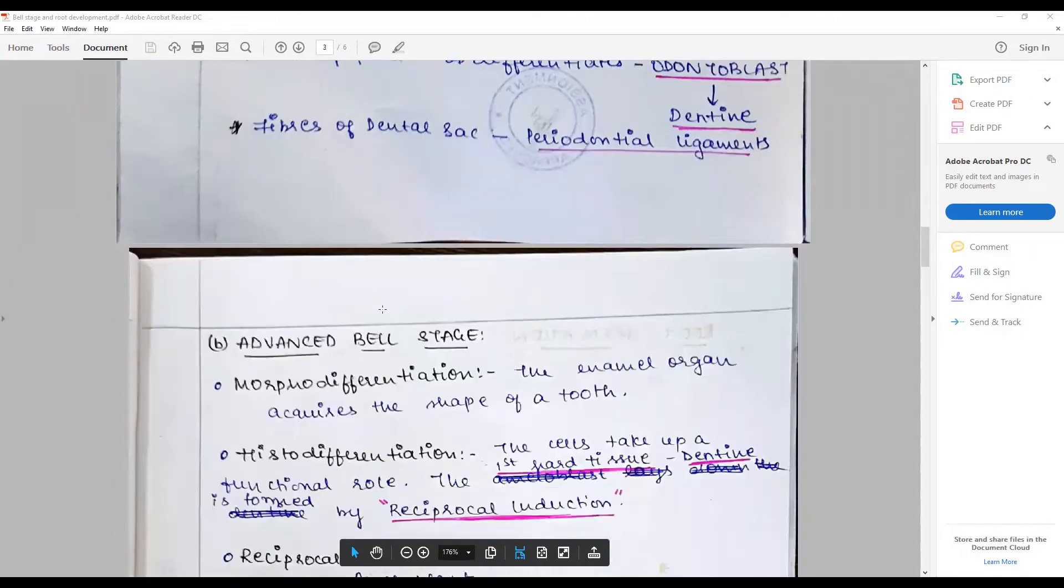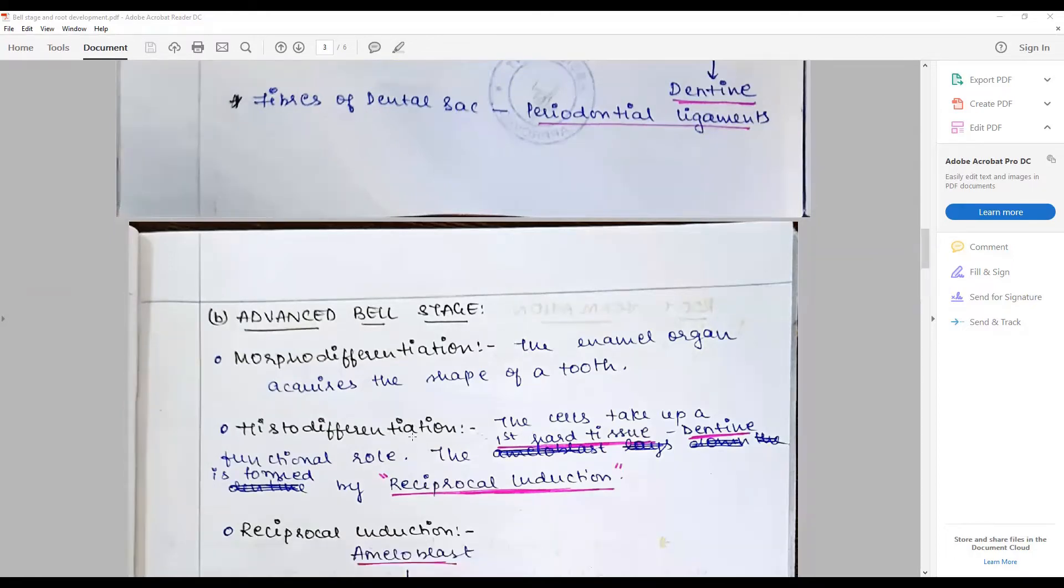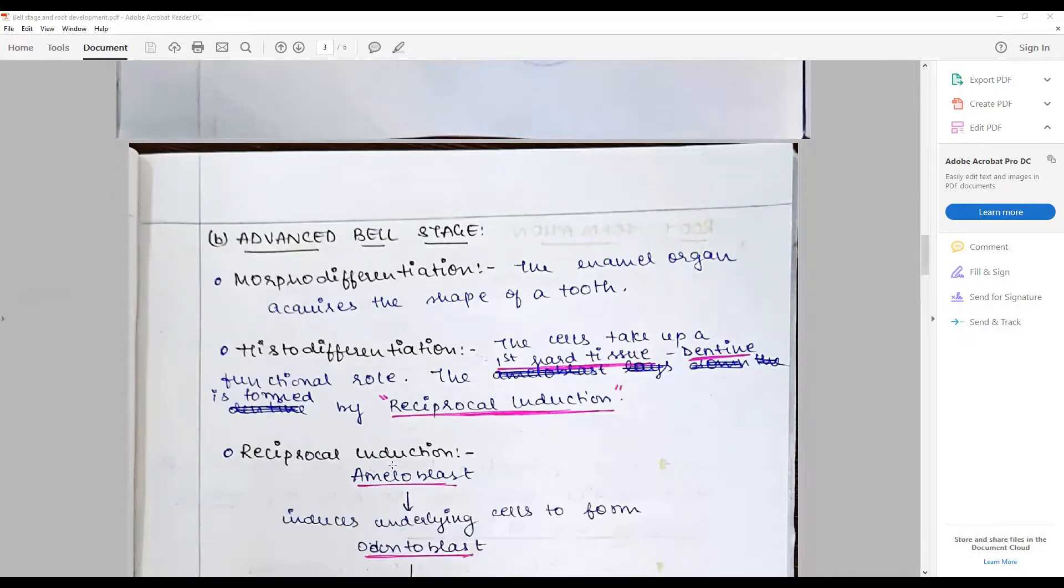In the advanced bell stage, you have to talk about the morphodifferentiation - how the enamel organ acquires the shape of the tooth - and histodifferentiation, where the cells take up their functional role. The first hard tissue, dentine, is formed by reciprocal induction. Say what it is.